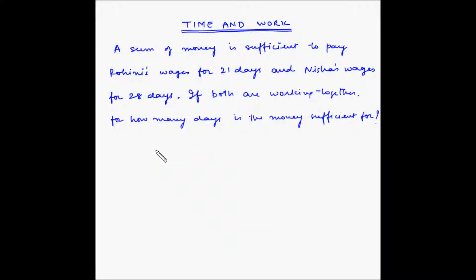Welcome to another example of time and work, where we will find out how to calculate wages when two workers are working together. A sum of money is sufficient to pay Rohini's wages for 21 days and Nisha's wages for 28 days. If both are working together, for how many days is the money sufficient?